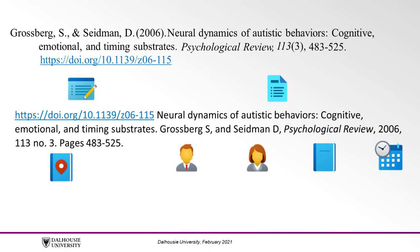Next, the publication year in parentheses — so 2006. Next comes the article title, the main topic in sentence case: 'Neural dynamics of autistic behaviors: Cognitive, emotional, and timing substrates.' The journal title comes next, using italics and headline style capitalization. So in this case, both words of 'Psychological Review' are capitalized. A comma goes after the journal title.